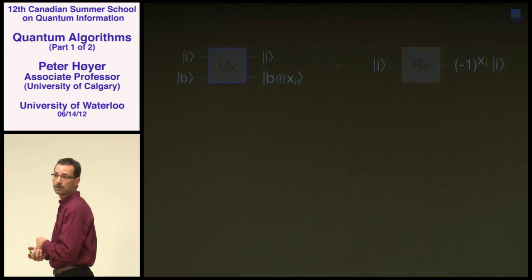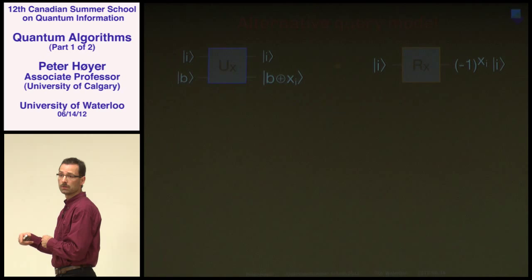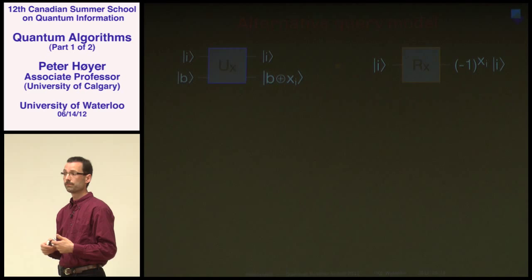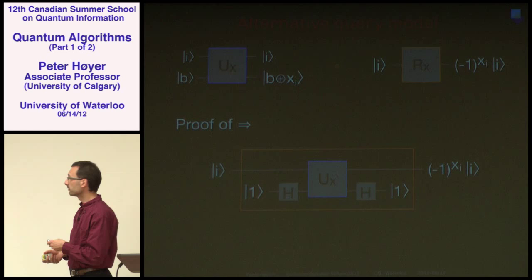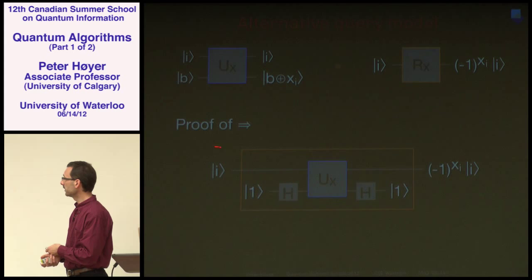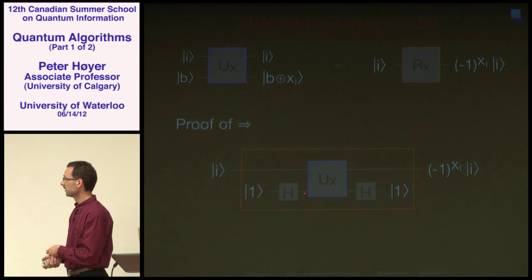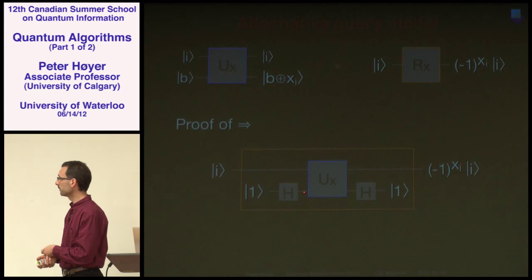In the phase oracle model, to know the bit in envelope i, you get the answer in the phase: instead of flipping a coin, you flip the phase. If you flip the phase twice you're back to the original. If the envelope contains a one, you pick up a minus one — the phase is negated. These two models — the computational basis oracle and the phase oracle — are actually equivalent.